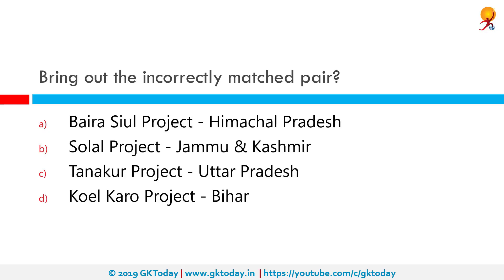Which of the following is an incorrectly matched pair? The incorrect match is Koyal Project–Bihar. The Koyal Project is actually in Jharkhand. The South Koyal River runs across Jharkhand and Odisha states. The Koyal Project is a proposed project to generate 710 megawatts of power by building two dams across the Koyal River and a connecting channel.